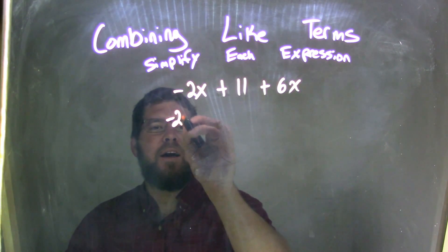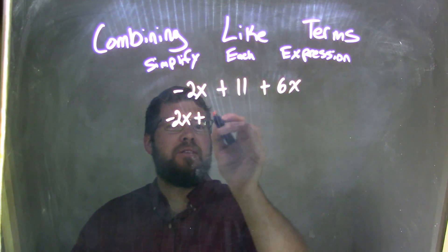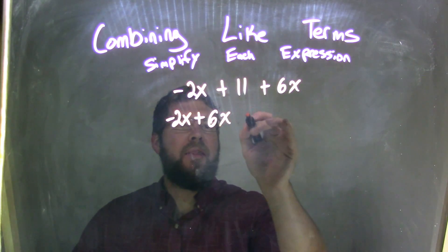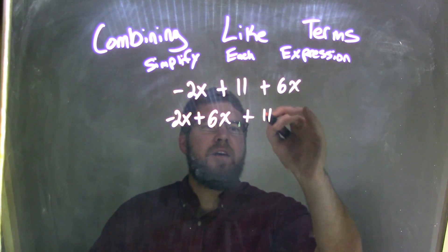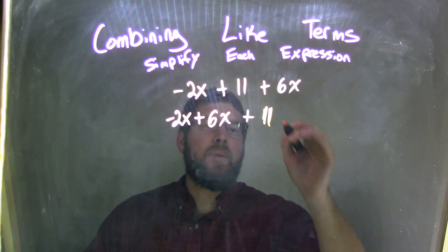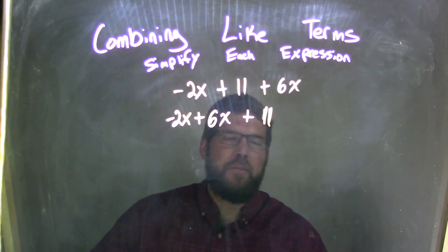So, I have the negative 2x out here, plus, bring the 6x over here, and then plus the 11 at the end. Since there's no other number, the plus 11 is really by itself there.